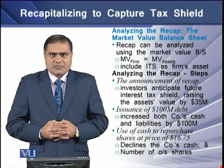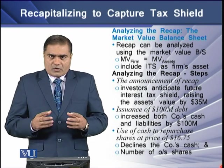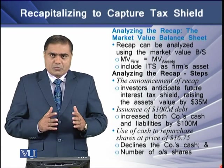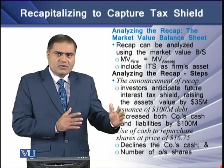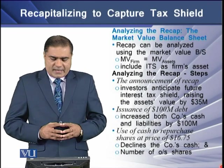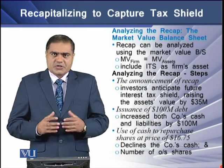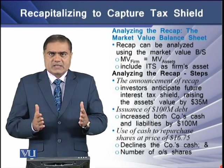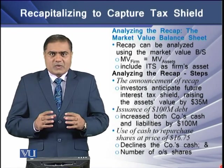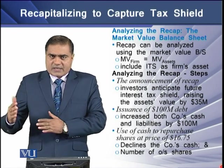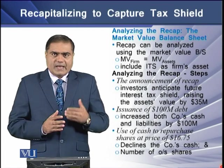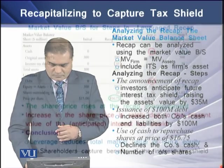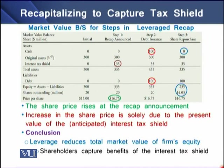The second step is the issuance of $100 million in debt by the firm, which increases both the firm's assets in the form of cash and the firm's obligations in the form of debt on the liabilities side. The third step is the utilization of the debt proceeds to repurchase shares, which reduces the company's cash on the assets side and reduces the number of the firm's outstanding shares on the liabilities side. All three steps can be analyzed using the market value balance sheet.